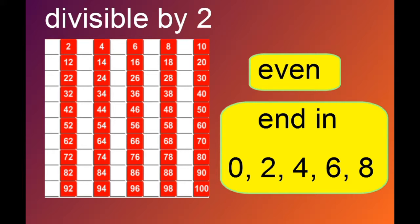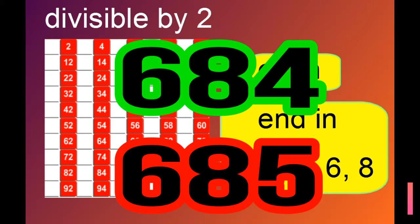Here, I've got the numbers divisible by 2 going up to 100, but of course they go further and they go on forever. For example, I could tell you straight away that 684 is divisible by 2, but 685 is not divisible by 2 because it ends in a 5.